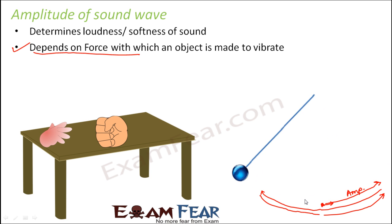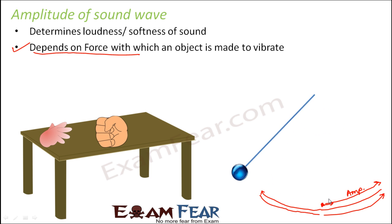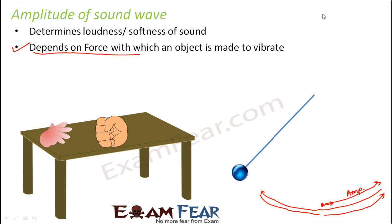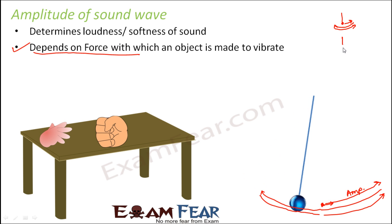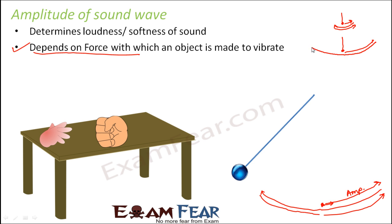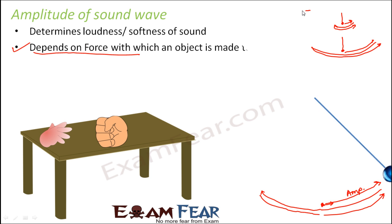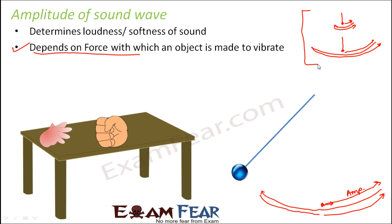If you apply a smaller force, the object travels a smaller distance in either direction. So force applied is directly proportional to amplitude, and as amplitude increases, vibrations increase. If the amplitude is very small, the object goes only a short distance and comes back. If the amplitude is more, it goes a greater distance — so the vibration is more in that case. This is how vibration and amplitude are related to each other.